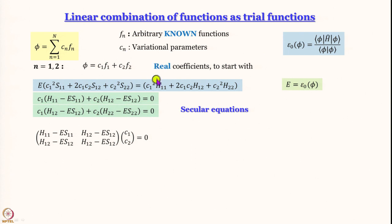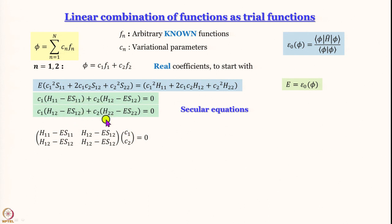We have kept only real coefficients here, but the mathematics is not vastly different if the coefficients are imaginary — imaginary coefficients are a reality. You always end up taking their complex conjugate when talking about contributions. We have constructed the secular equations for the two variational parameters, the two coefficients, written in terms of H_11, S_11, H_12, S_12, S_22, and H_22.